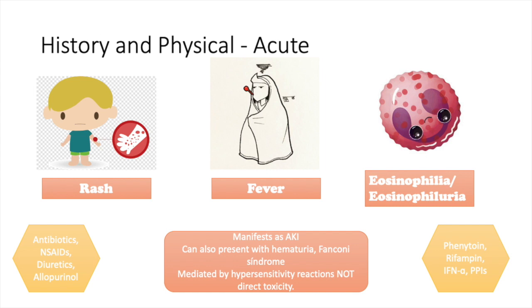We have to have a suspicion of TIN when we see this triad: rash, fever, and eosinophilia or eosinophiluria. Finding the complete triad is actually rare — it only happens in about 10% of cases — but any of these three can point you towards investigating renal function.